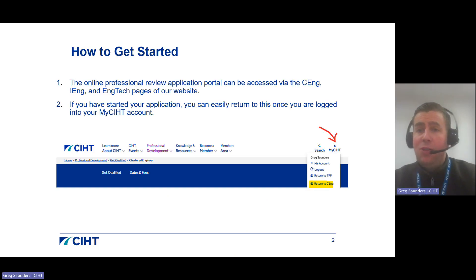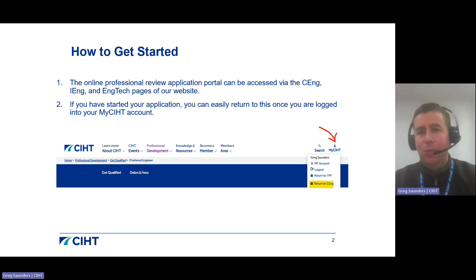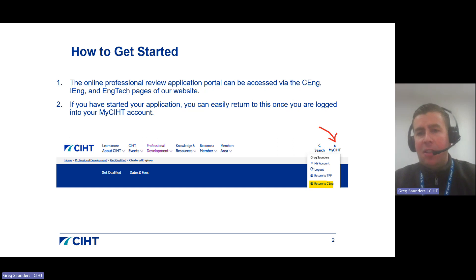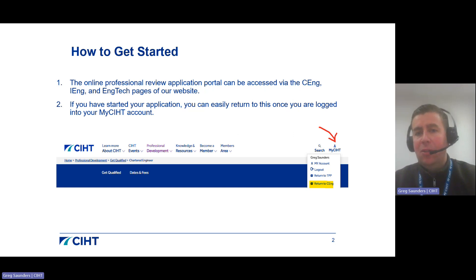If you are interested in applying for professional review through CIHT, your application must be submitted via our online application portal. This can be accessed via the CENG, IENG and ENGTECH pages of our website, but please be aware that there is a different online form for each level, so please make sure you're using the correct one before you start.